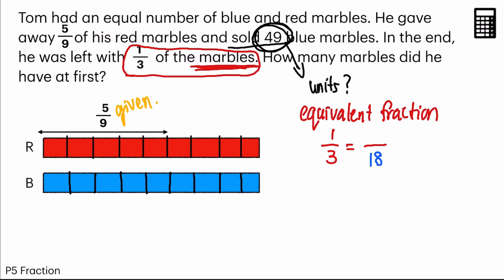So I'm going to change it to 18, equivalent fractions, 18 parts. Which means I'm going to multiply by 6. And on the top, the numerator, I have to multiply by 6 as well. So I get 6 out of 18.